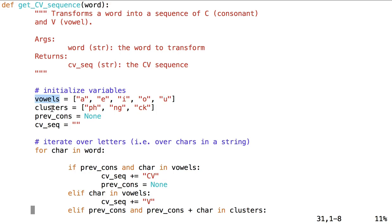We also want to define clusters, which in this case we're saying clusters is a list of consonant combinations like the pH in photon, like the NG in clicking, or the CK in clicking, which represent a single consonant sound pronounced. We do not pronounce the P and the H separately, we pronounce them as one. We don't pronounce the N and G separately, we pronounce them as one. We don't pronounce the C and K separately, we pronounce them as one.